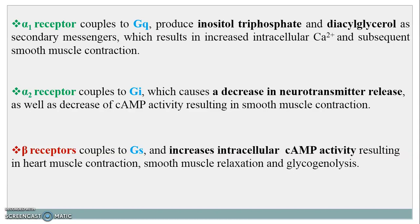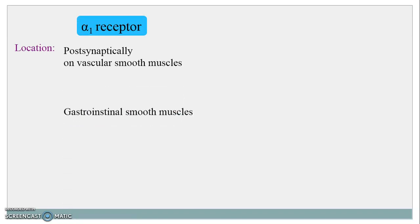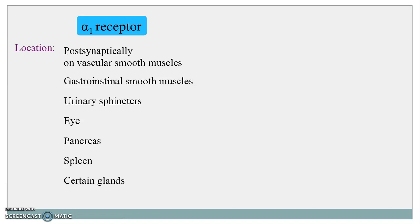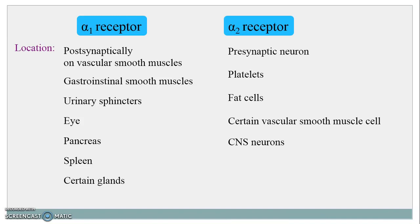So these are the main effects of the alpha 1, alpha 2 and beta receptors. Now, next is their location. The alpha 1 receptors are found post-synaptically on vascular smooth muscles, gastrointestinal and urinary sphincters, eye, pancreas, spleen and certain glands. Whereas alpha 2 receptors are located presynaptically, where they control the release of noradrenaline by a negative feedback mechanism. Other sites include platelets, fat cells, certain vascular smooth muscle cells and CNS neurons.